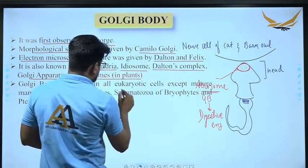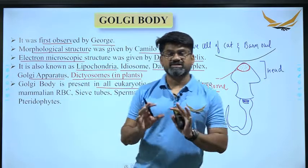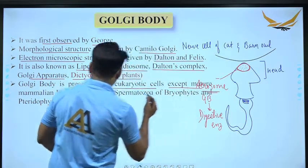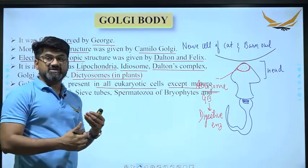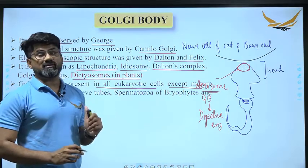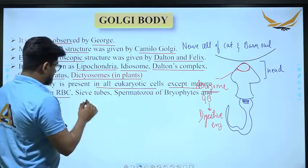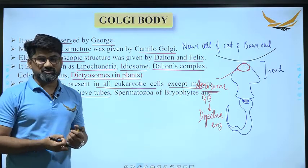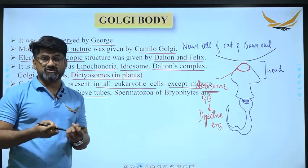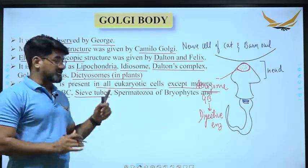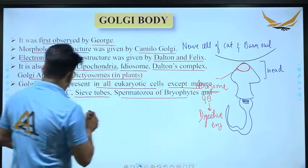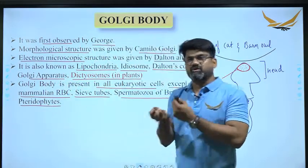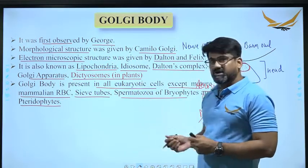Golgi body is present in all eukaryotic cells except mature mammalian RBCs. In the early stages when RBCs develop, they do have Golgi body, but later it is wiped out. It is also absent in sieve tube cells, which are components of phloem tissue in plants. Spermatozoa of bryophytes and pteridophytes also do not have Golgi body.